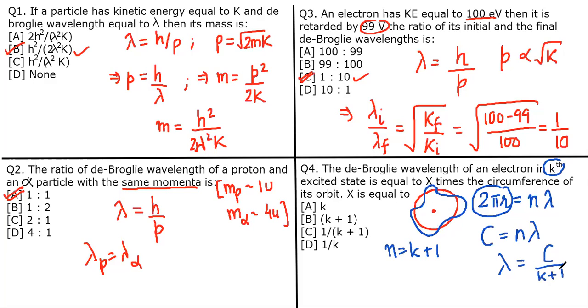So λ is 1/(k+1) times C. There's a wonderful option waiting for us: option C. That's a very good DPP revision. Thank you!